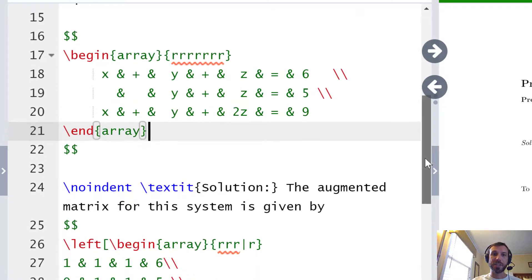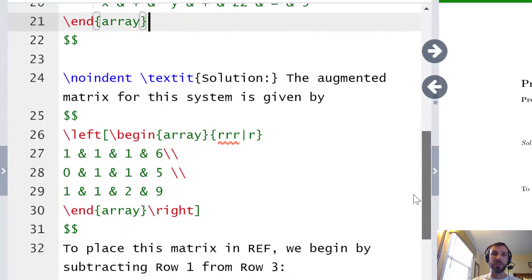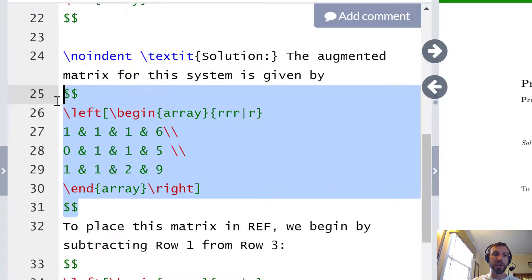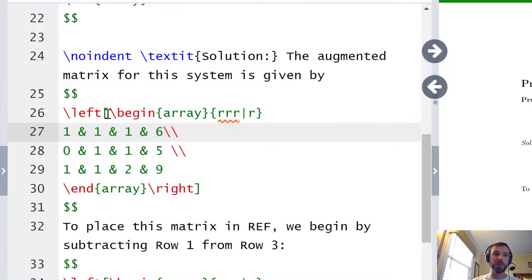Moving on down the document, the second place where we use the array function is in the creation of our augmented matrix. This is very similar to the first declaration with two exceptions. First of all we have a backslash left bracket and backslash right bracket at the beginning and the end of the declaration. This creates the brackets around our matrix in the output.